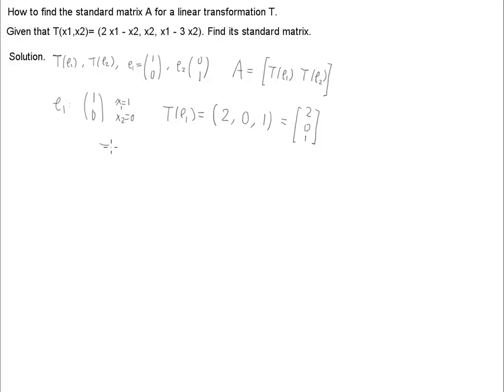And do the same thing for the second vector, e2. E2, that means this is 0 and this is 1. So e2 over here, we have this one over here, (0, 1).